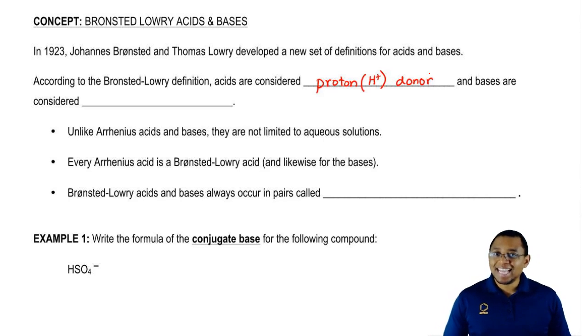Bronsted-Lowry still agreed with that. They said that we agree, an acid should have an H-plus. Where they disagreed though, Bronsted-Lowry didn't believe that a base needed an OH-minus to be a base. What they said instead was if the acid donates H-plus, then the base must accept the H-plus.